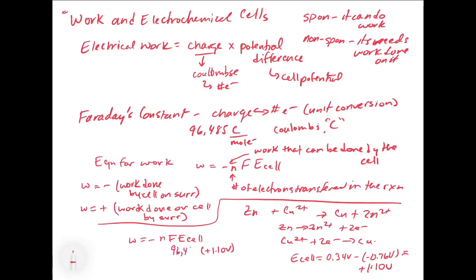Plugging into our work equation with Faraday's constant of 96,485 coulombs per mole, N = 2 electrons transferred, and E_cell = 1.10 V, we get W = −2.12 × 10⁵ joules per mole. The coulombs times volts gives units of joules, and we retain the per-mole from Faraday's constant. That's how you calculate work for a cell.